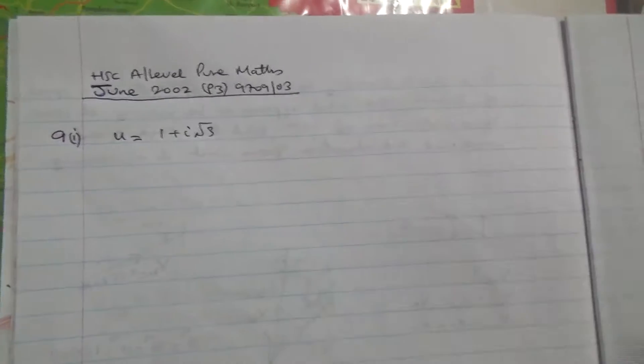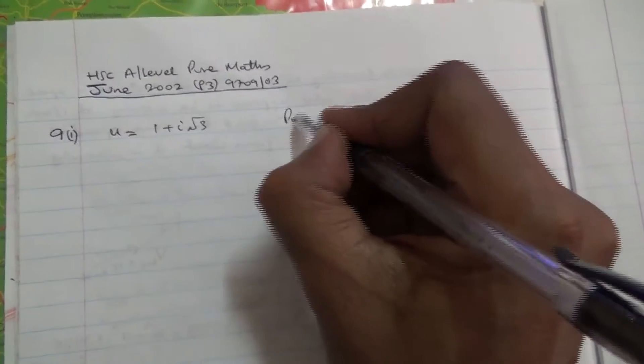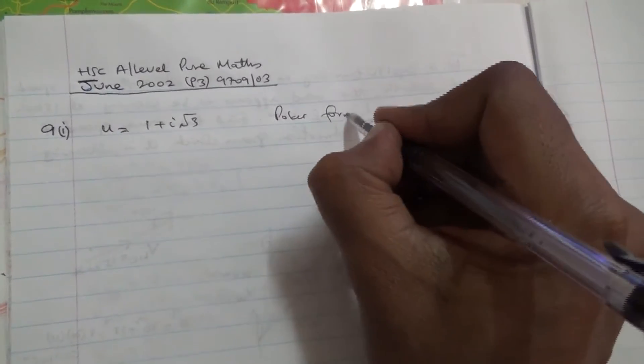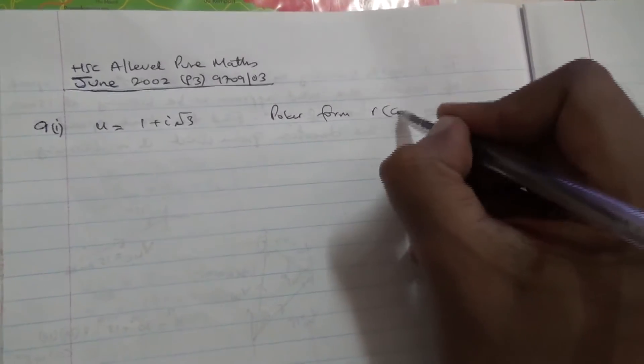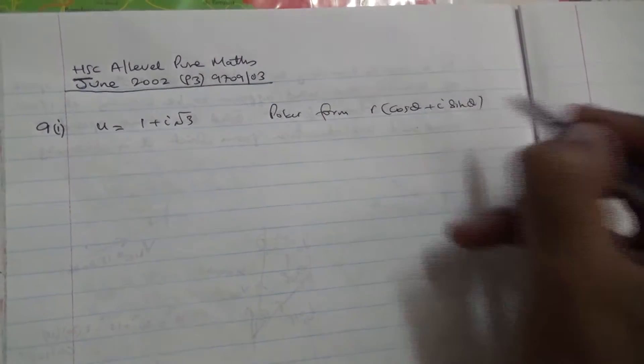For the first part, we have the complex number u equal to 1 plus i root 3. We need to express it in the polar form: r cos θ plus i sin θ.